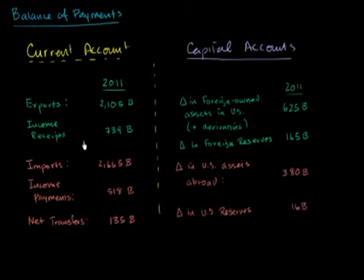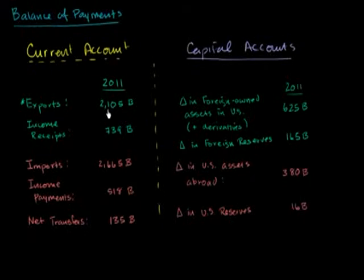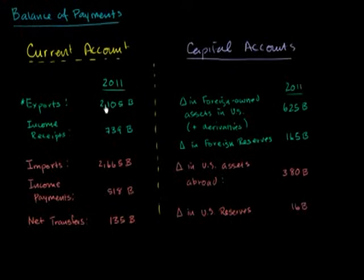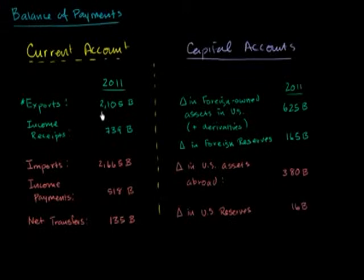In green, I have all the reasons why the US got payments from the rest of the world in 2011. The first one is exports. If we are exporting — and this is in billions — $2,105 billion, which is the same thing as $2.1 trillion worth of goods and services, then the rest of the world is going to have to pay that much to us. This is going to be an inflow, a payment — a reason why more dollars have to come to the US, either to US private citizens, to the government, or to the Federal Reserve. For the most part, this is going to be for private citizens or corporations.